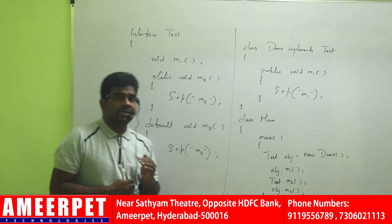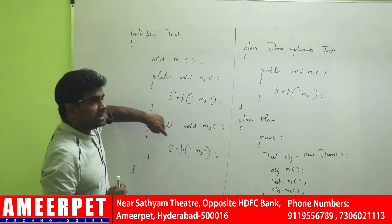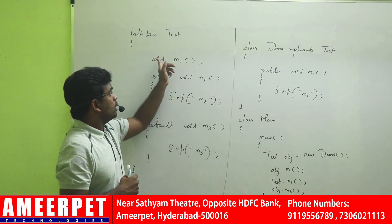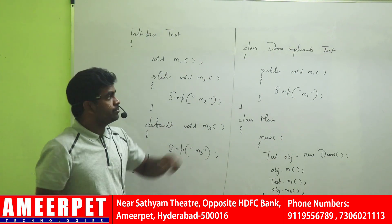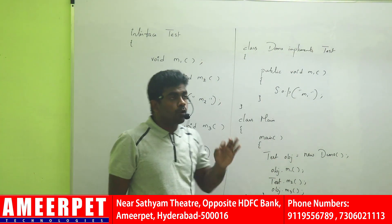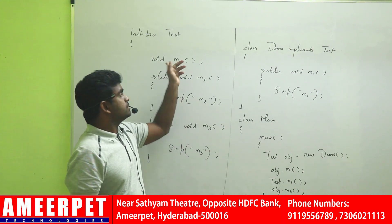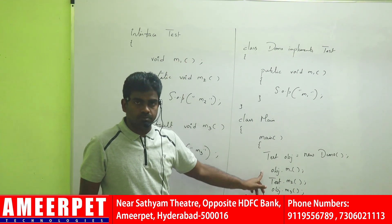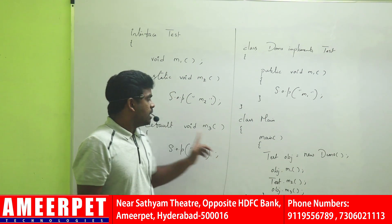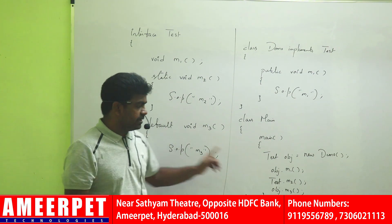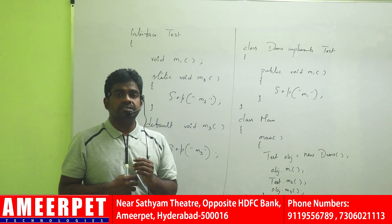So once again, since JDK 8, it is allowed to define static methods and default methods inside the interface along with the abstract methods. Every class can implement the interface. In the implementing class, you need to override the abstract methods. Instance methods — abstract methods — are accessed using the object. Static methods are accessed using the class name or interface name. Default methods are also accessed using the object name. This is what interface looks like since JDK 8.